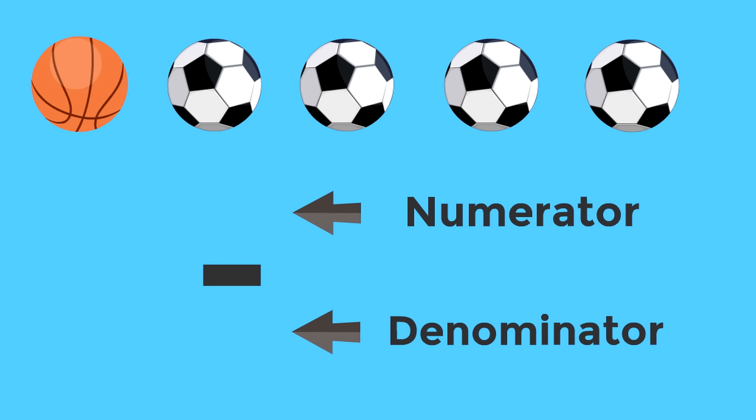So, we know a fraction has a line in the middle and the top number is the numerator and the bottom number is the denominator. The denominator shows us the total number of parts or units. How many sports balls are there? Yeah, five. Five is the denominator. Good job. Now, remember, we're asking for the fraction of sports balls that are basketballs. So, how many basketballs are there? Yeah, just one. The number one is the numerator. So, one-fifth of the sports balls are basketballs. One-fifth. Great job.